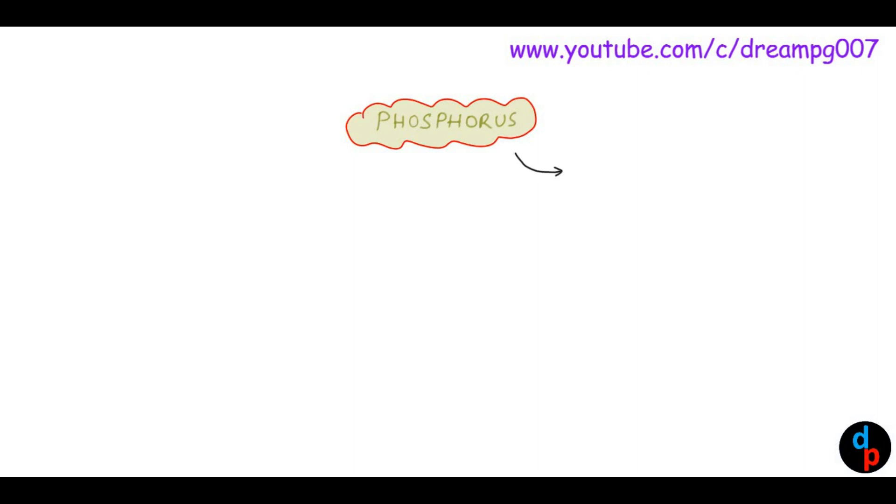Phosphorus is a protoplasmic poison which affects cellular oxidation. The main organ affected by phosphorus poisoning is the liver.